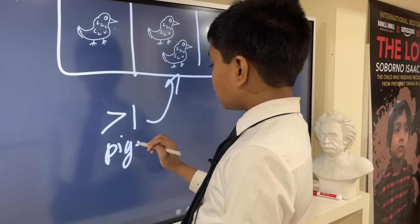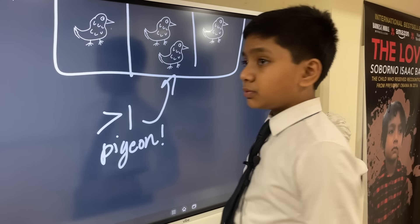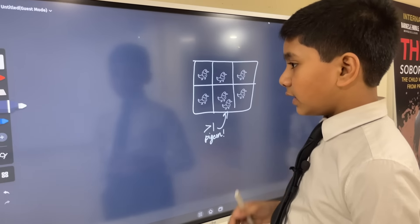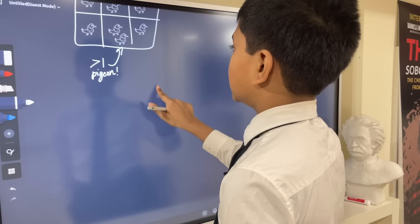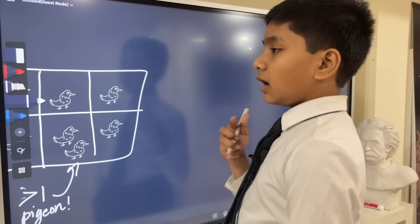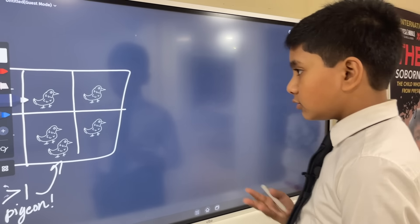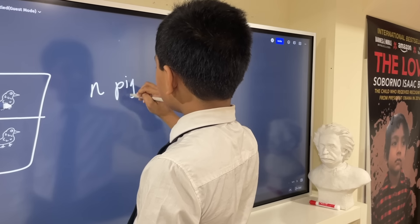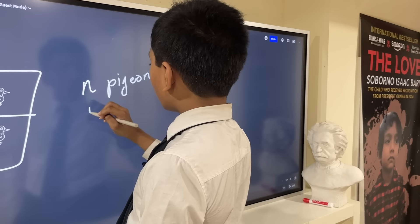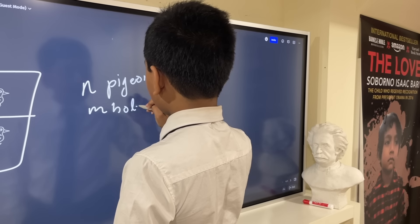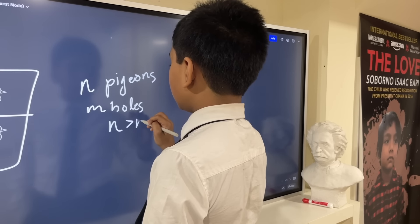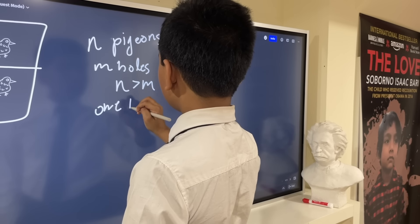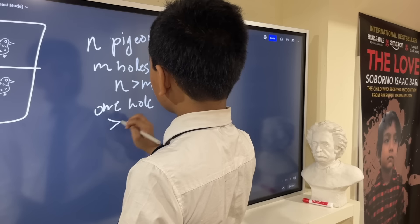Now, all of these have at least one pigeon. So, where is this last one going to go? Well, no matter where it goes, that hole is going to have more than one pigeon. How can this be proved? Well, it's quite an obvious principle, and it can be done off intuition. But to really prove it, you've got to think about the contrapositive.